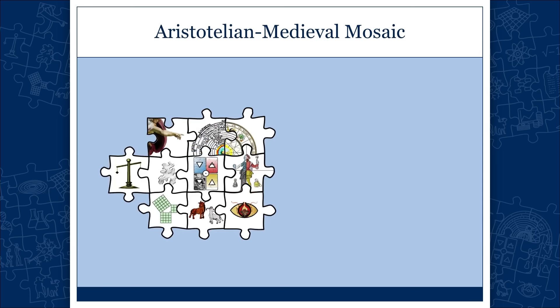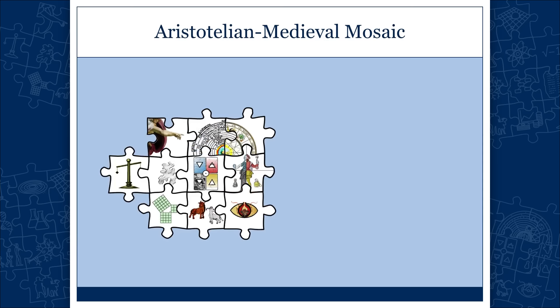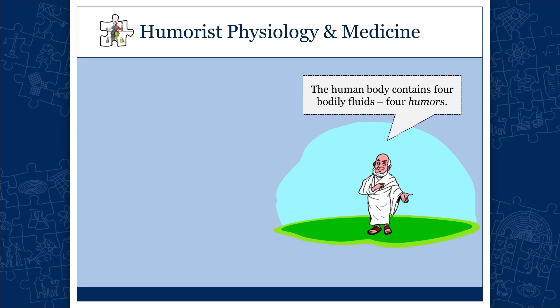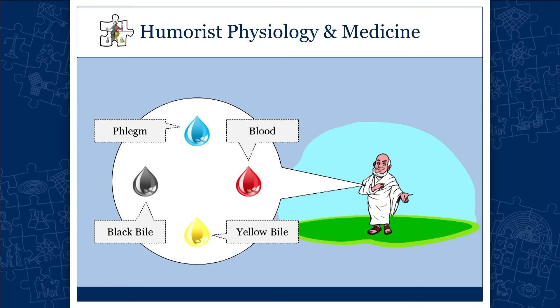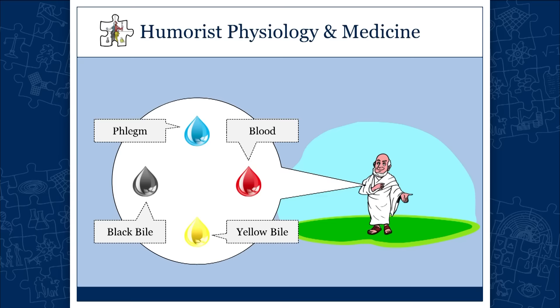A few things about their humoral physiology and medicine. Let's take Socrates — a human being. They believed that a human body contains four bodily fluids, the so-called humors: blood, yellow bile, black bile, and phlegm. This is the humoral theory of medicine. Hippocrates, Galen — the great physicians of the past — all believed in this theory. This was the accepted theory all the way into the 18th century.